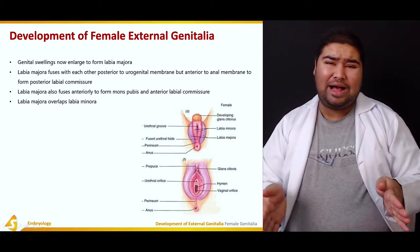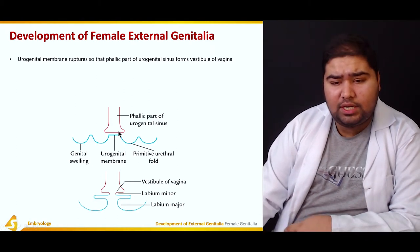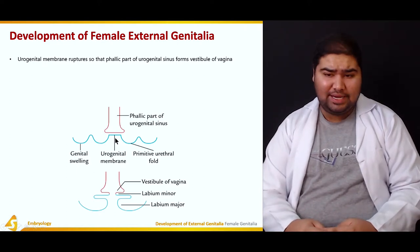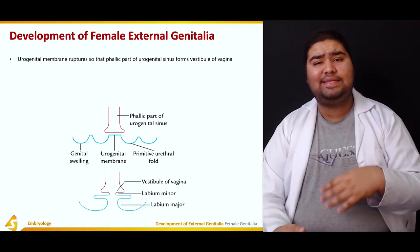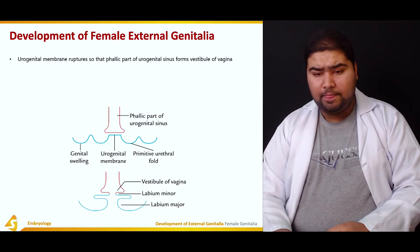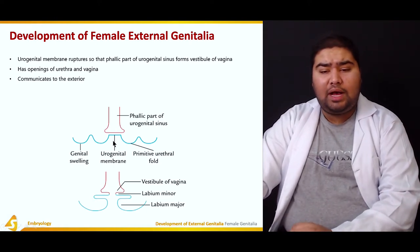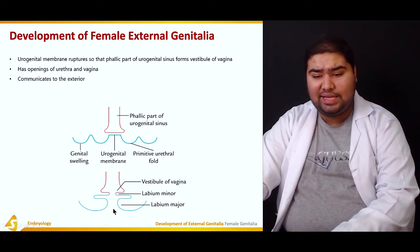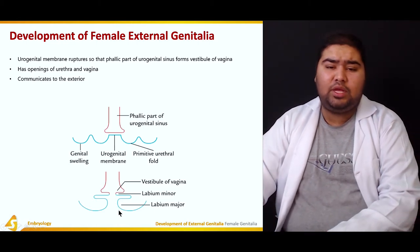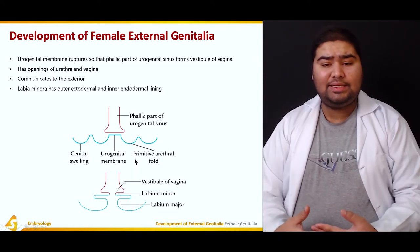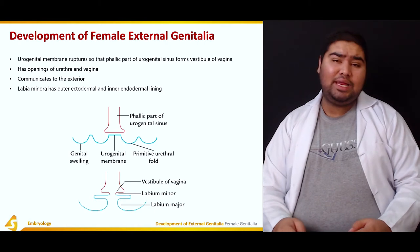The labia majora actually overlaps the labia minora. The urogenital membrane separates the phallic part of the urogenital sinus from the vestibule of the vagina. It has openings for the urethra as well as the vagina. After this membrane ruptures, it communicates to the exterior — here is the labia minora, the labia majora, and the vestibule of the vagina, all in complete communication with the exterior. The labia minora has an outer ectodermal and inner endodermal lining.